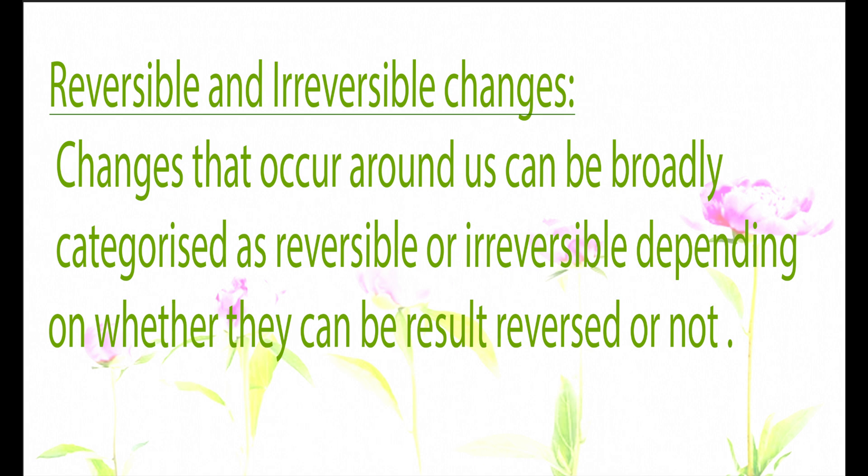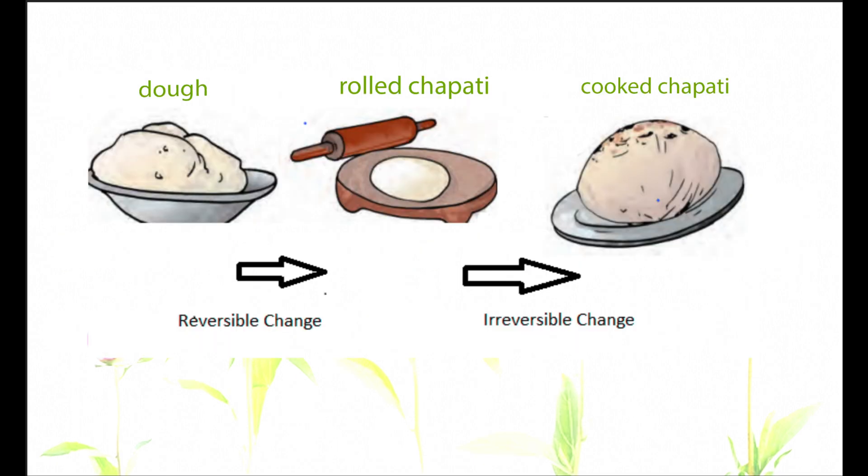For example, we take a dough, roll it into a chapati, and then cook the chapati. In this whole process, what is a reversible change and what is an irreversible change? The reversible change is taking a piece of dough, making a bowl out of it, and rolling it into a chapati.